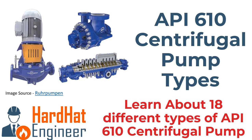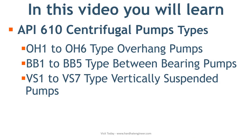Welcome to HardwareEngineer.com. I am Varun Patil. In this video, I am going to explain API 610 centrifugal pumps. You will learn about the following types of pumps based on the API 610 standard: OH1 to OH6 type overhung pumps, BB1 to BB5 type between bearing pumps, and VS1 to VS7 type vertically suspended pumps.